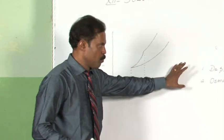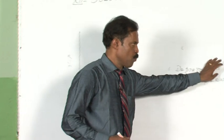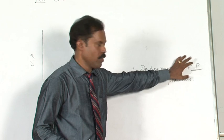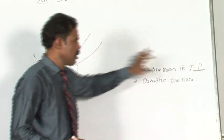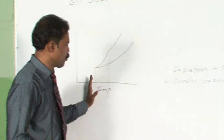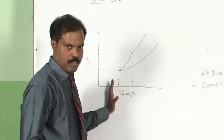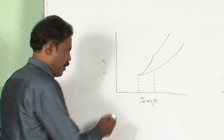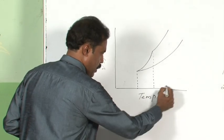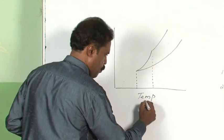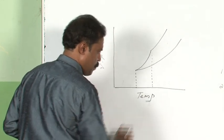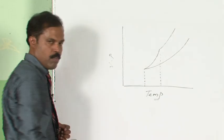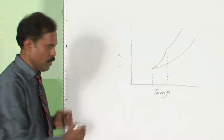Let me explain what freezing point is and how exactly the depression in freezing point happens. Look at the graph. On the x-axis we plot temperature, and on the y-axis we plot vapor pressure.